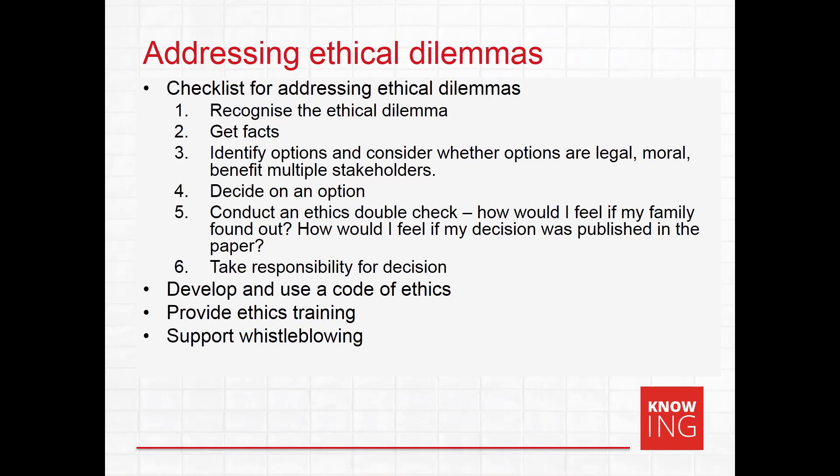Another strategy is to provide individuals with ethics training, where people are given structured training programs to help develop high standards of ethical behaviour and decision-making. Finally, a legal protection that exists in Australia is whistleblower legislation. Whistleblowers are those that expose the misdeeds of others and play an important role in protecting ethical standards. Whistleblower legislation is supposed to protect individuals that speak out about unethical practices from retaliation from their workplace. Some workplaces build in policies, procedures and personnel to actively support whistleblowers and protect their anonymity.